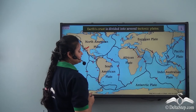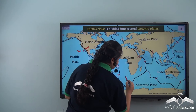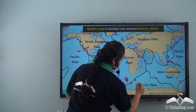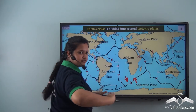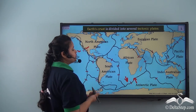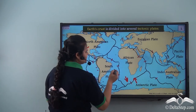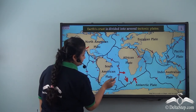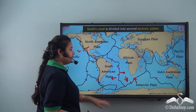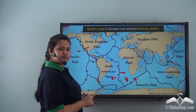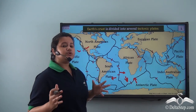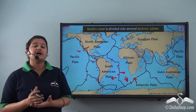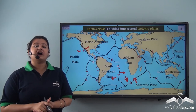The tectonic plates either converge — for example, the African plate and Antarctic plate moving toward each other — or diverge, such as the African plate and South American plate moving apart, forming a divergent plate boundary. Due to this convergence and divergence of tectonic plates, mountains are formed.